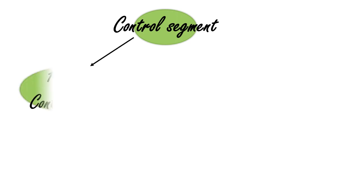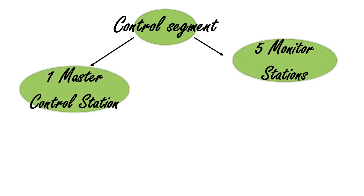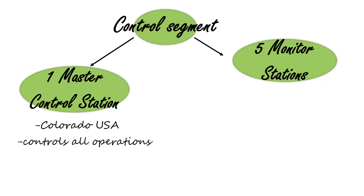The control segment has one master control station and five monitor stations, three of which are also upload stations. The master control station is in the USA and is the operation center of the GPS; it controls all operations in the control segment. The master control station has an atomic clock, which serves as the reference for the GPS.